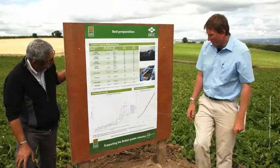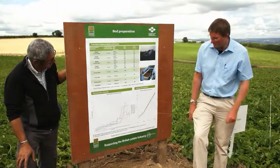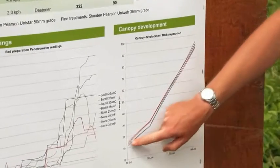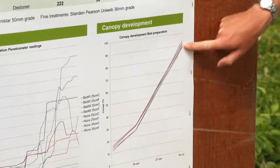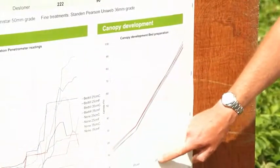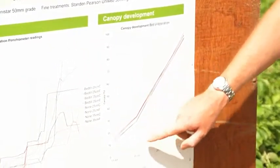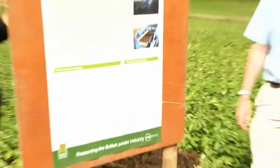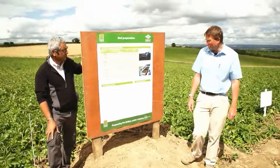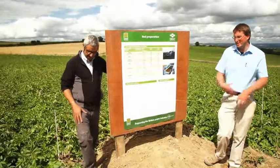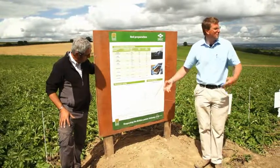For the penetrometer readings, you can see two different line clusters. The bottom cluster — those that emerged very slightly slower and grew slightly slower away — are all the coarse treatments. We had a little bit of initial delay, but basically by somewhere before the end of June all those lines had merged. As you can see from all the plots, there's no difference in canopy today. The emergence difference is probably down to soil-to-seed contact.